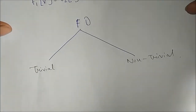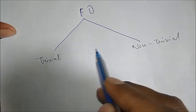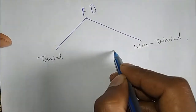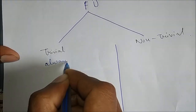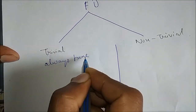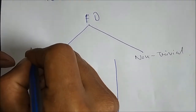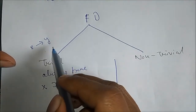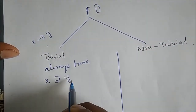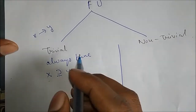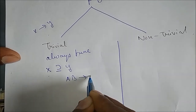Functional Dependency is divided into two types: one is trivial and another is non-trivial. Trivial means always true. X should be a subset of Y. If X is a Functional Dependency on Y, then X should be a superset of Y. For a trivial example: A, B Functional Dependency A.